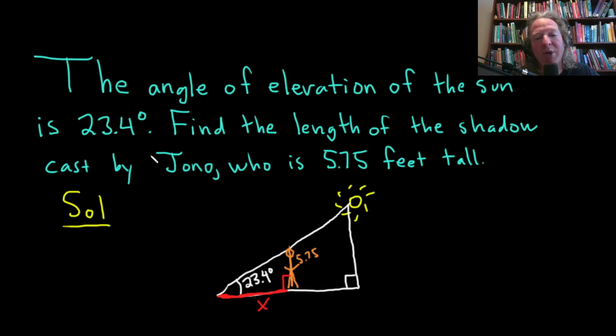We have to think about which trig function we can use. We know the ancient proverb SOH-CAH-TOA. For those who don't know this, sine of theta equals opposite over hypotenuse, cosine of an angle is adjacent over hypotenuse, and tangent of the angle is opposite over adjacent.